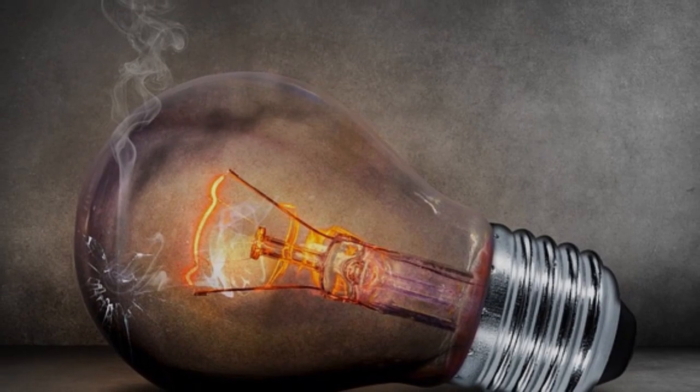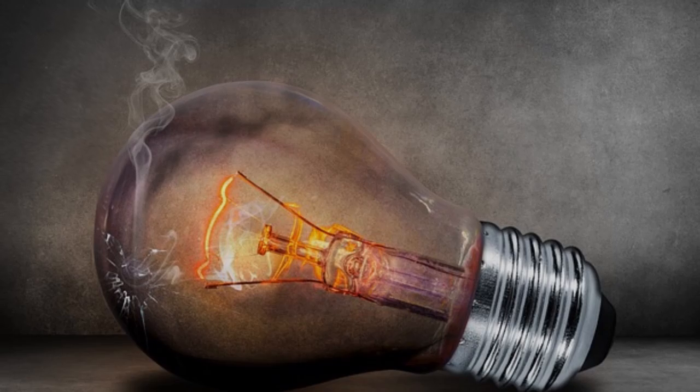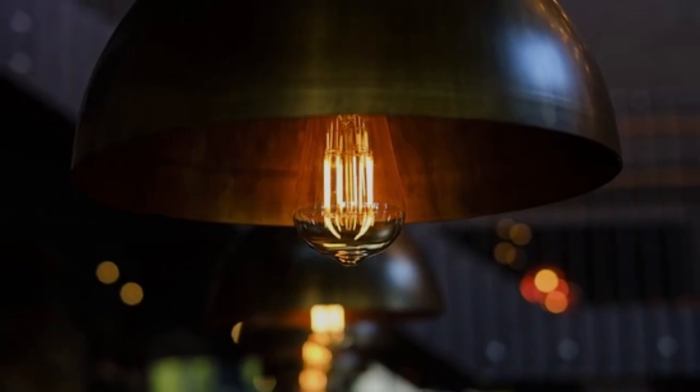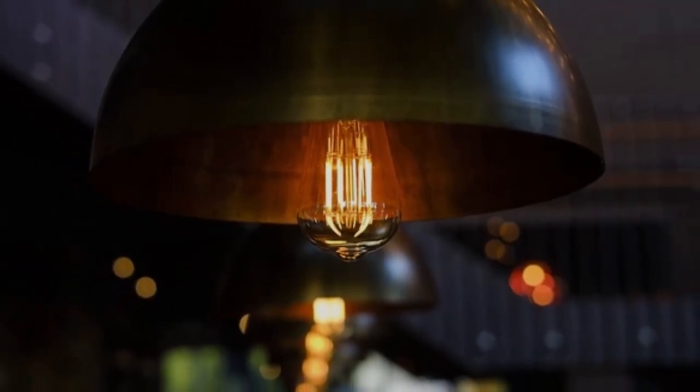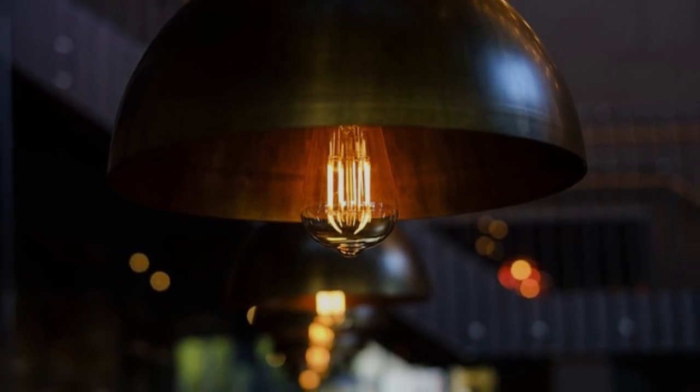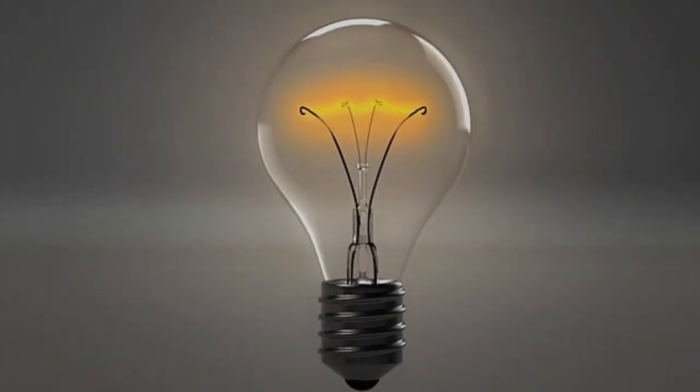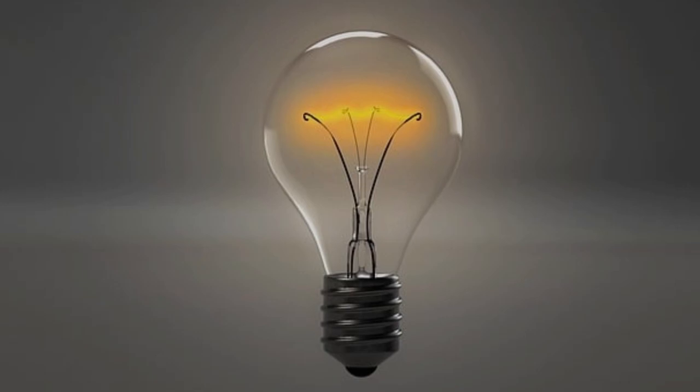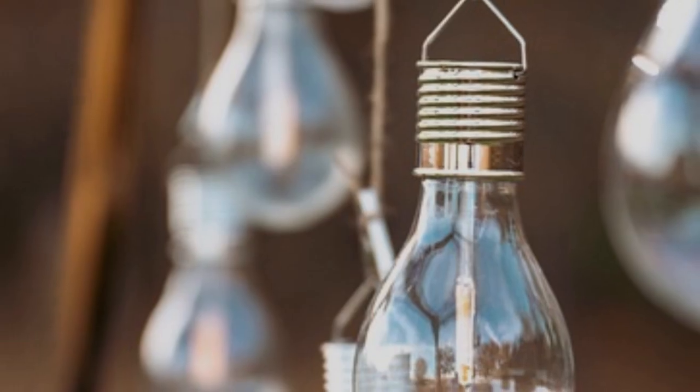Light bulbs are indeed designed to work at specific voltages. A 220 volts light bulb is engineered to handle the higher voltage, and if you try to use it directly in a 110 volts outlet, it may not work as expected. The bulb will draw half the power it needs, resulting in a dimmer light output.